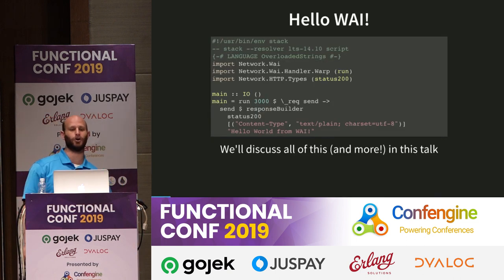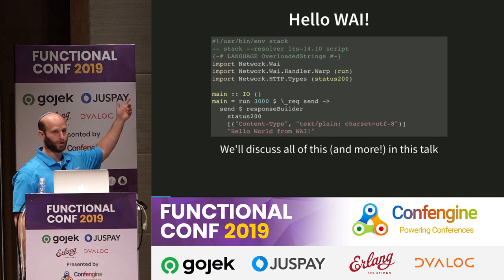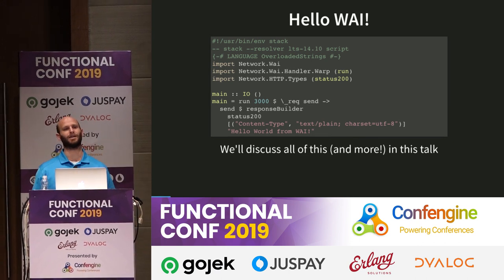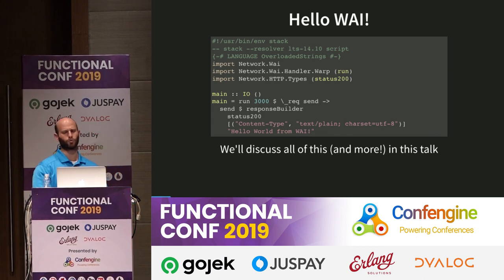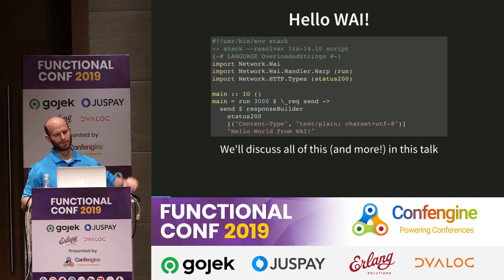Let's jump right in because everyone likes looking at code. This is a hello world application in WAI. We have three import lines, which is pretty benign for a Haskell application. We've got a language extension and some Stack stuff at the top. Then we've got this: we're going to run something listening on port 3000. There's some weirdness about a lambda, a request, and something about send. We're going to make a builder response with status code 200, text plain content type, and it's going to say 'hello world from WAI'.